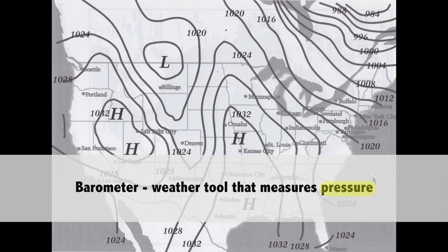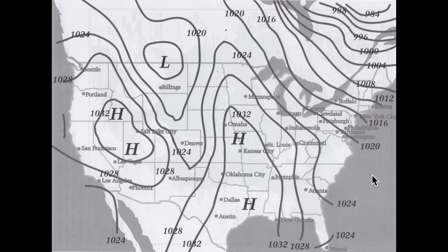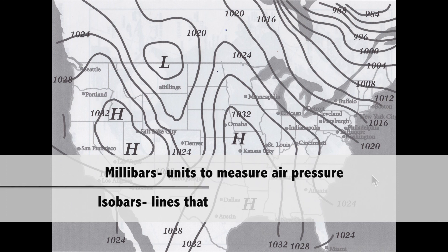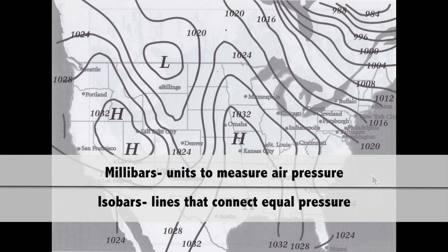So a barometer is a tool that measures pressure. The numbers you're seeing in front of you are in units of millibars — millibars are a unit of pressure — and the lines connecting these numbers are called isobars. 'Iso' means same.